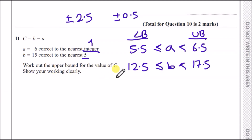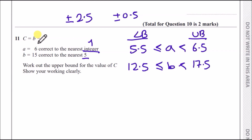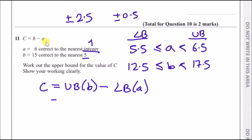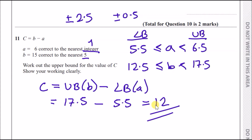To find the upper bound of c = b − a, we want the biggest possible b minus the smallest possible a. So upper bound of c = upper bound of b − lower bound of a = 17.5 − 5.5 = 12. The answer is 12.